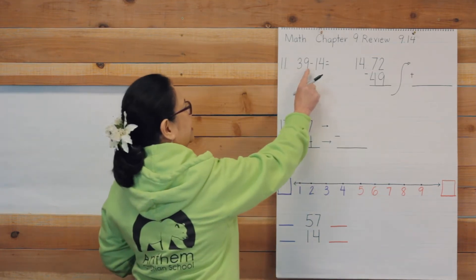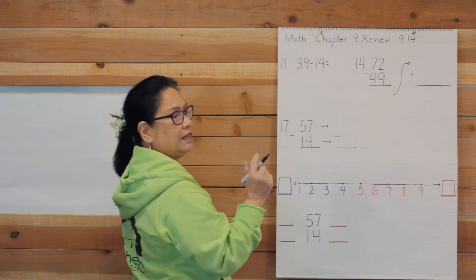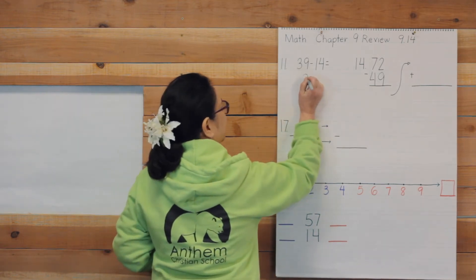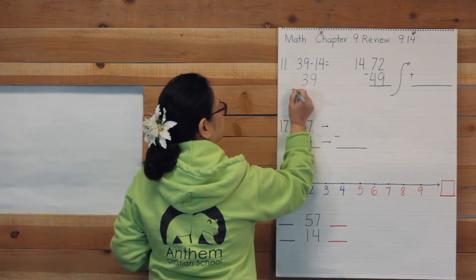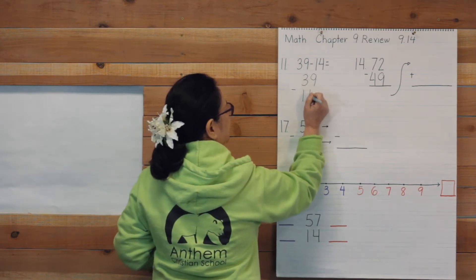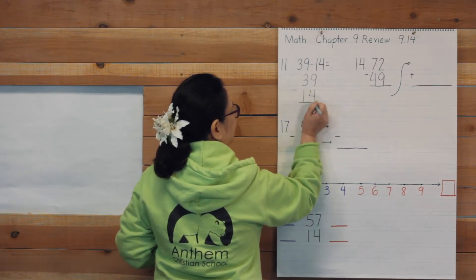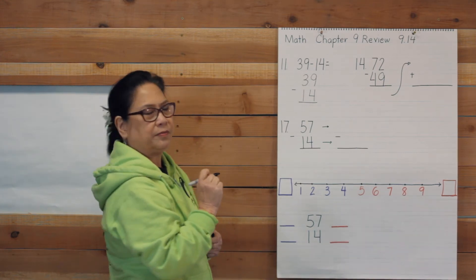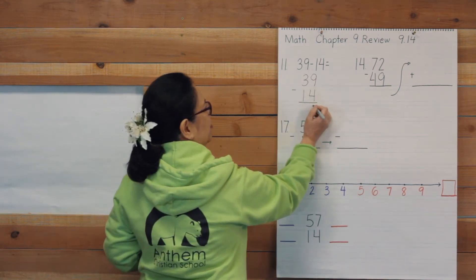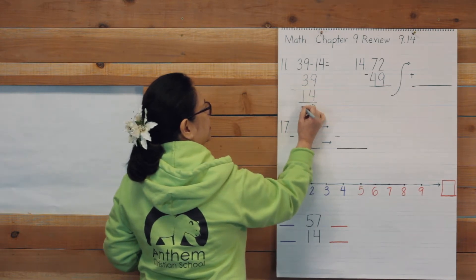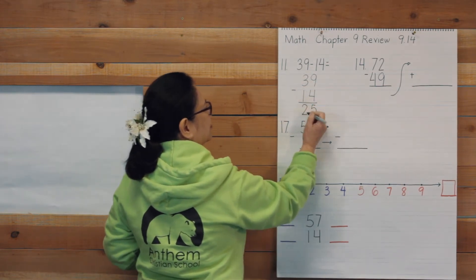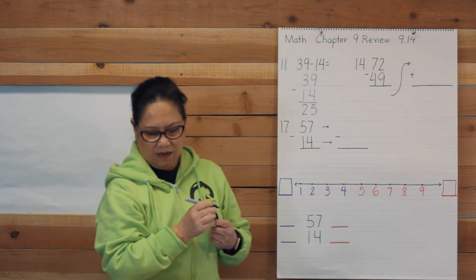So when you see 39 take away 14, go ahead and write it going down. Then solve the problem. 9 take away 4 is 5. 3 take away 1 is 2.